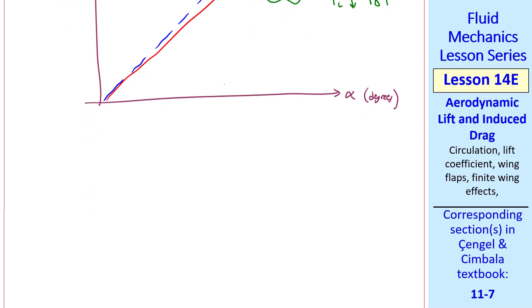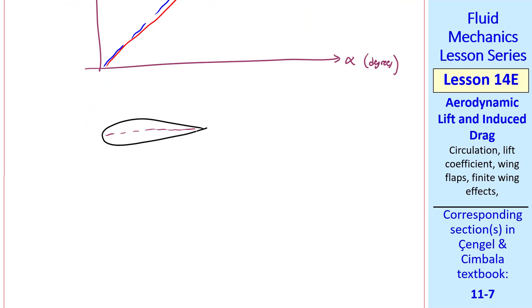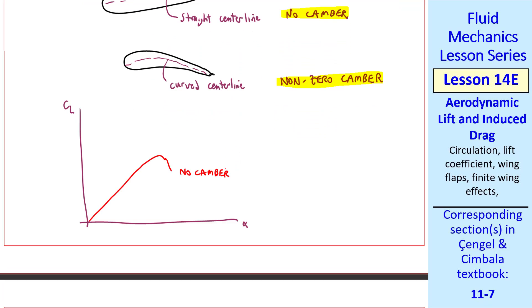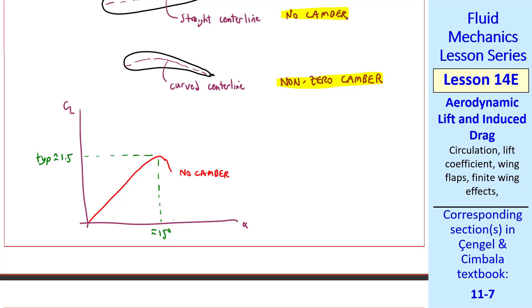There are various designs of airfoils. A symmetric airfoil, as its name implies, is symmetric top to bottom, and has a straight center line. Aerodynamicists say that this has no camber. If the center line of the airfoil is curved, this airfoil has non-zero camber. What's the purpose of camber? Well, as we've shown, an airfoil with no camber has a typical CL versus alpha curve like this, where CL max is typically about 1.5, and it occurs at around 15 degrees.